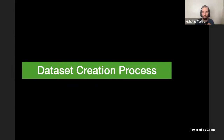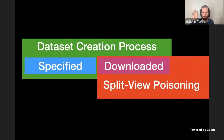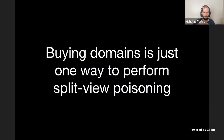What makes split-view poisoning work: it used to be the case that there was a single dataset creation process where a researcher would sit down, crawl the data, and publish it. Now we split this in half — the dataset is first specified, a paper is published saying 'here's the dataset,' and then people later go and download it. Split-view poisoning focuses on the second half — it lets you poison the dataset after it's been specified but before it's been downloaded.